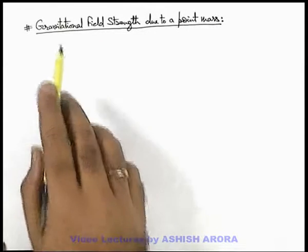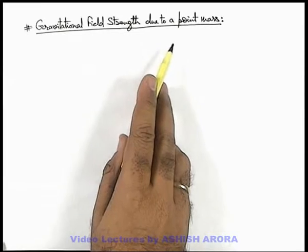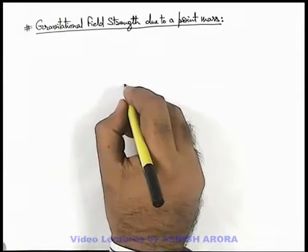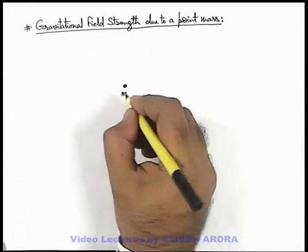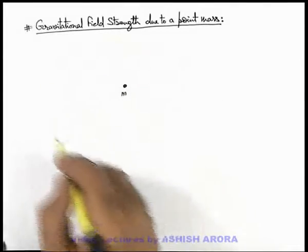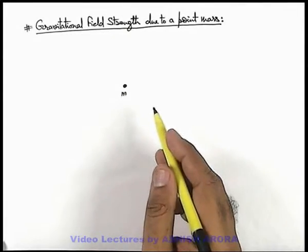Let us calculate gravitational field strength due to a point mass. Say we are having a point mass m. Then as we have already studied that in its surrounding region there exists a gravitational field.